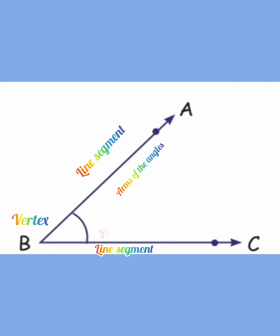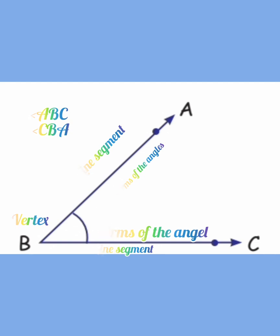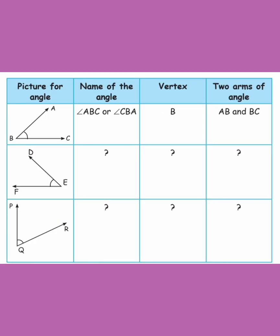The angle is written with three letters: A, B, C. B is the vertex in the middle. You can say the angle is angle A, B, C or angle C, B, A. The vertex is always the middle letter.